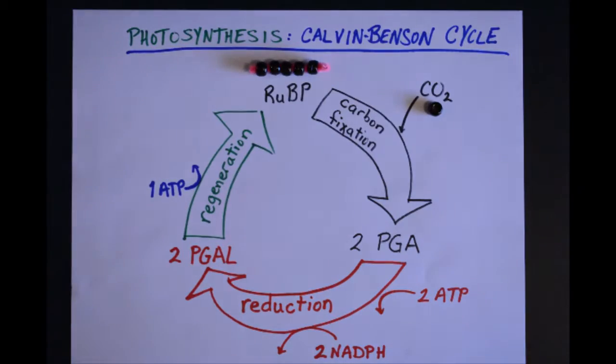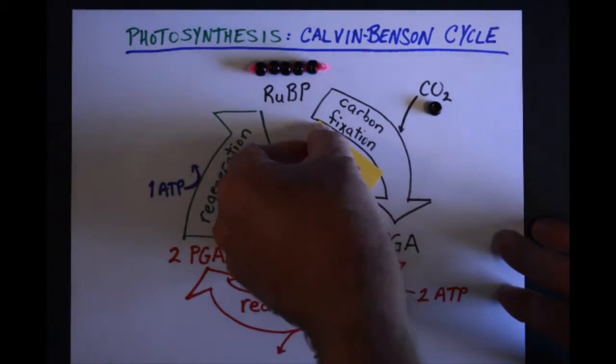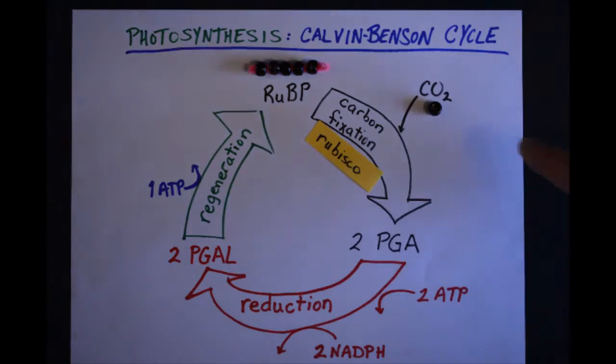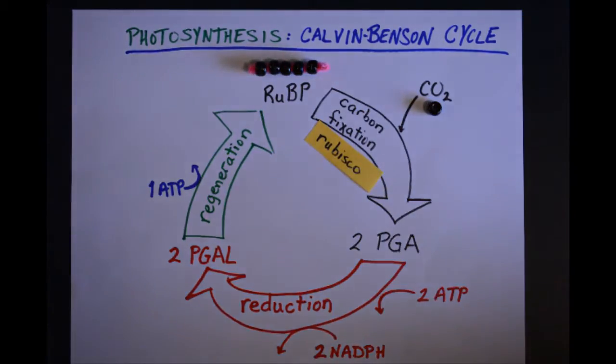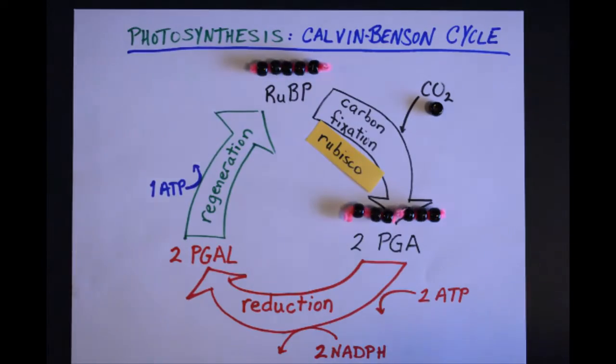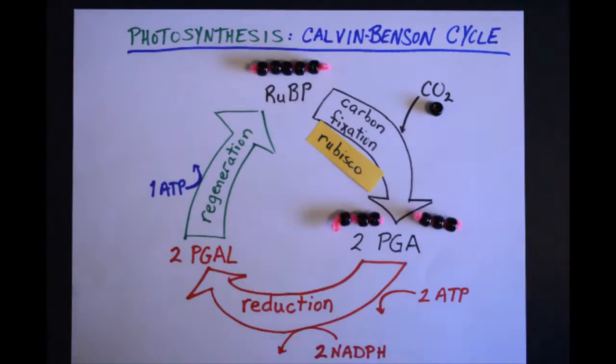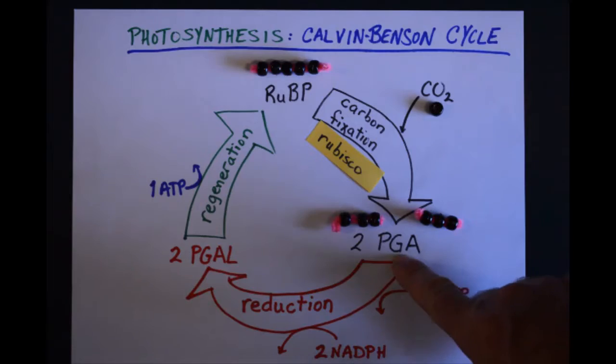This is the stage where we're going to take the one carbon dioxide molecule and with the help of the very important enzyme Rubisco, we're going to take this carbon and add it to that chain making a six carbon chain. That six carbon chain is immediately broken down into two three carbon molecules called phosphoglycerate.